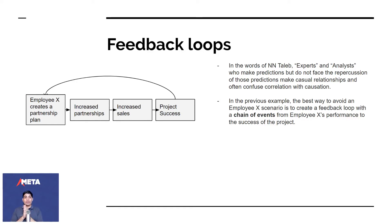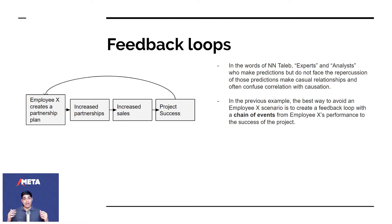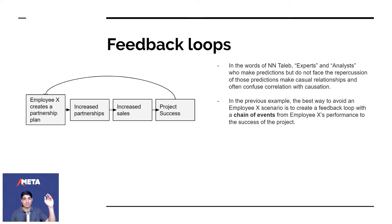It's really important to see the entire picture, gather as much data, and create a feedback loop. In the employee X scenario, the best way is to create a feedback loop with a chain of events from employee X's performance to the success of the project. You break it down — for each KPI the employee was given, how much did they accomplish? For example, if employee X creates a partnership plan, the first thing that happens is partnerships increase, then there's an increased number of sales, then there's project success.